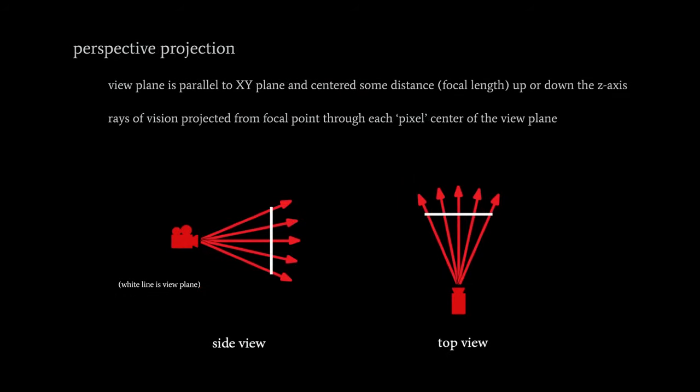To simulate what the human eye or camera sees, we want a perspective projection. For a perspective projection, imagine the view plane has moved up the Z axis some distance from the origin — that distance we call the focal length. At the origin, which we call the focal point, it's our center of vision. The rays of vision all run from the focal point through each pixel center on the view plane, fanning out from the center in both the X and Y dimensions. This describes how a human eye or camera sees, in reverse — light comes from those directions toward our eye, but we imagine rays going the opposite direction.